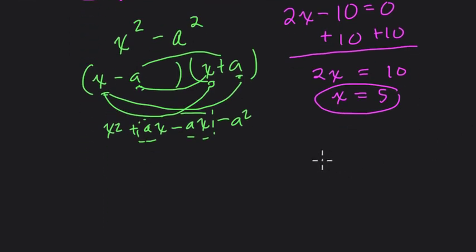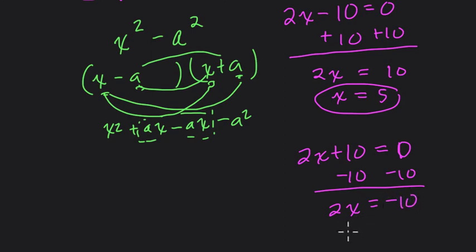Now the second answer, we have 2x + 10 = 0. Subtract 10 from both sides. 2x = -10 divided by 2. And the other answer is x = -5.